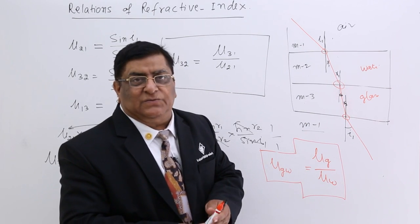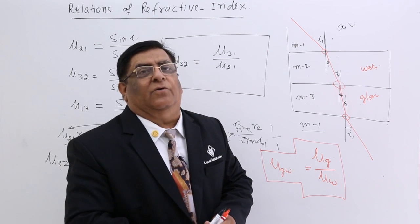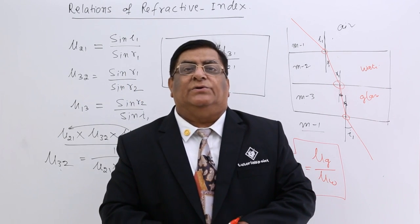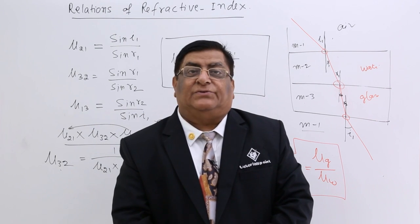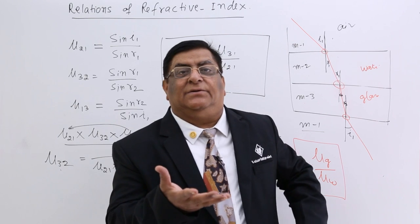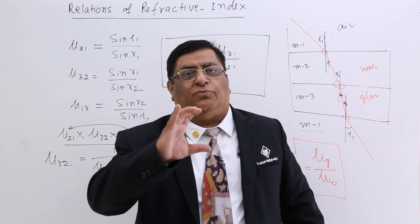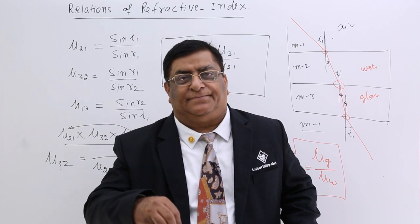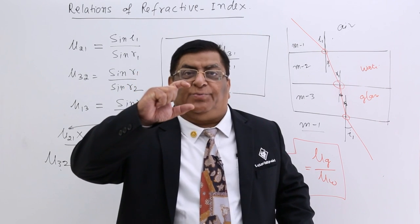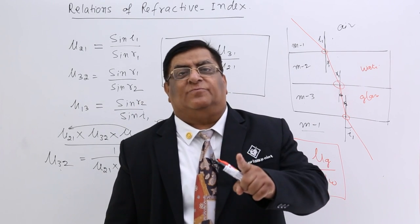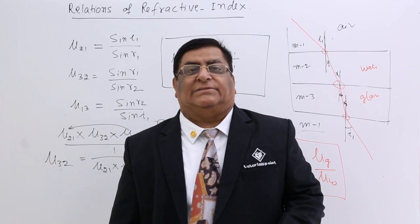Now that we have these relations — the inversion relation and the formula mu glass-water equals mu glass divided by mu water — we are ready to do certain applications. The first application is when we see the depth of a surface under a transparent medium like water. We see the bottom of a river or pond through water and it appears as if the depth is less than the actual depth. Why this happens we will see in the next lecture. Thank you.